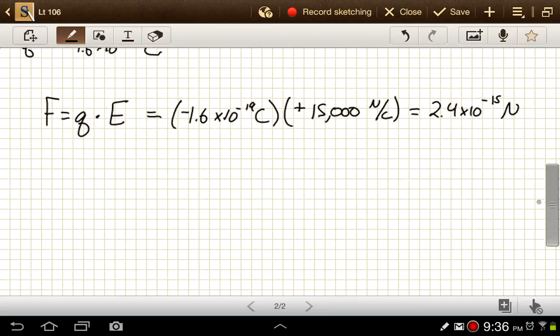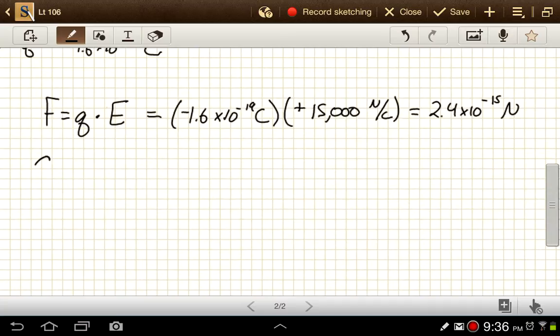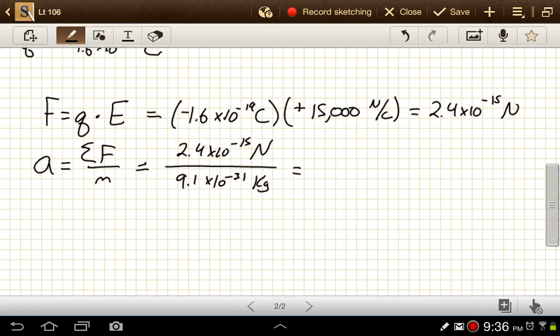All right, now that we've got the force, we can use that to find the acceleration. So acceleration is going to be the force divided by the mass. It's really the net force divided by the mass. But since we're not told anything about other forces here, we can assume this is the only force that's acting on the electron. So that'll be that 2.4 times 10 to the negative 15th newtons divided by the mass of the electron. And that was 9.1 times 10 to the negative 31st kilograms.